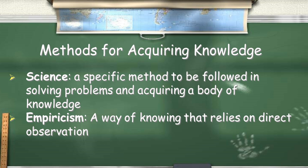Empirical knowledge is knowledge that relies on direct observation, and that direct observation can come through any of our five senses.